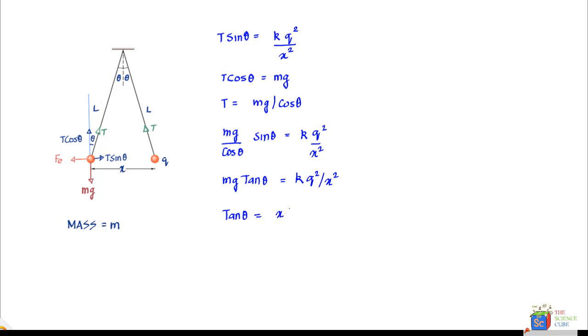That is half of this distance divided by the base, which is nothing but L square minus x upon 2 square. Now if it's given that theta is very small, your x by 2 value should also be very small.